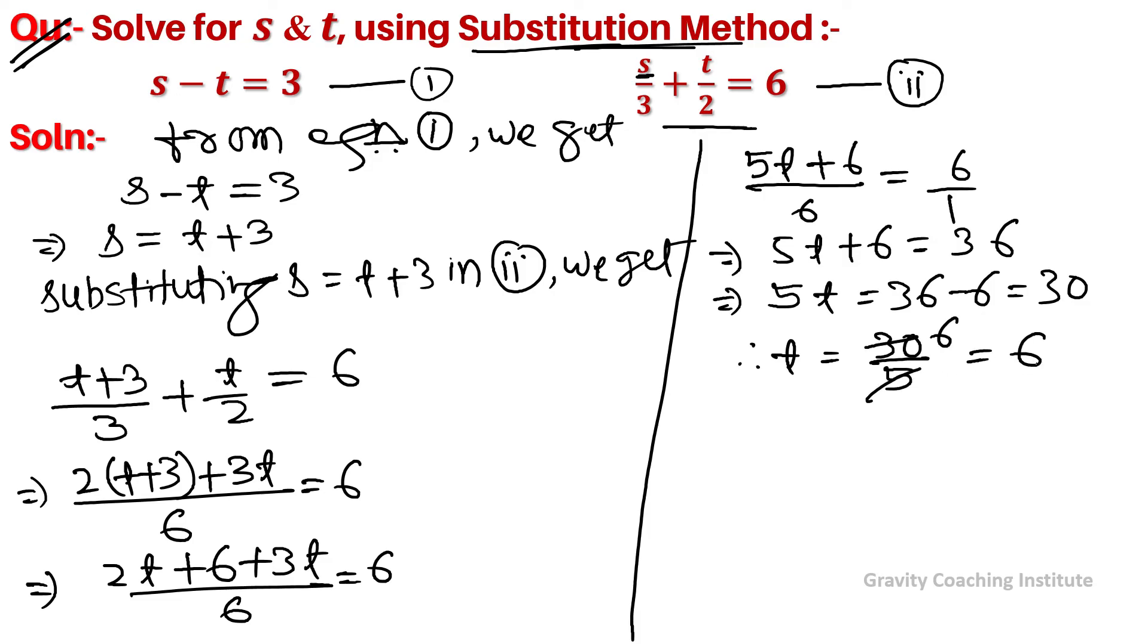So t = 6. Putting this value: s = t + 3 = 6 + 3 = 9. Therefore s = 9 and t = 6. Answer.